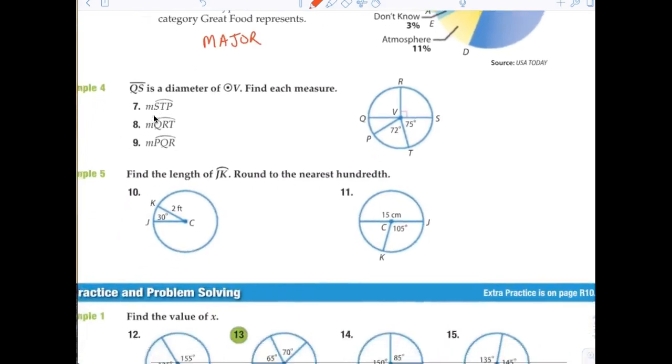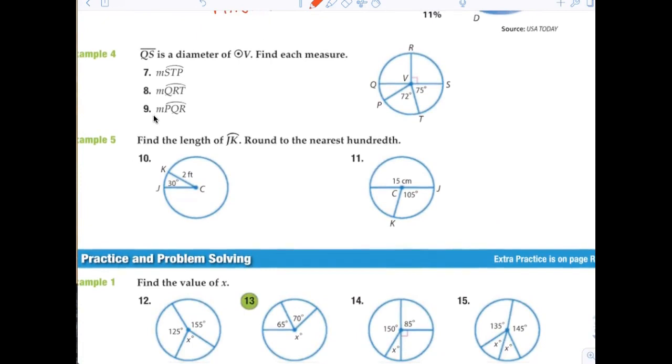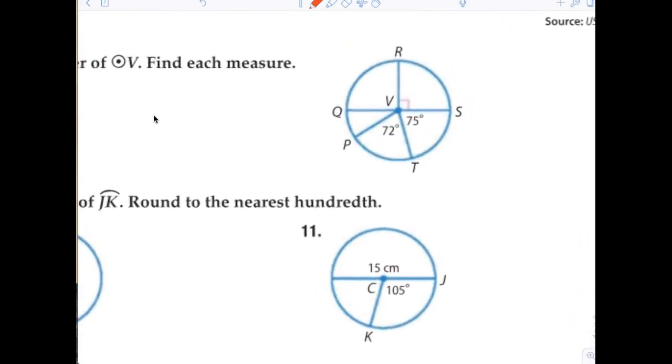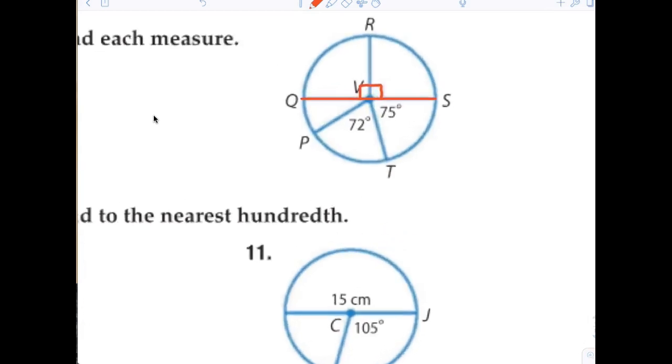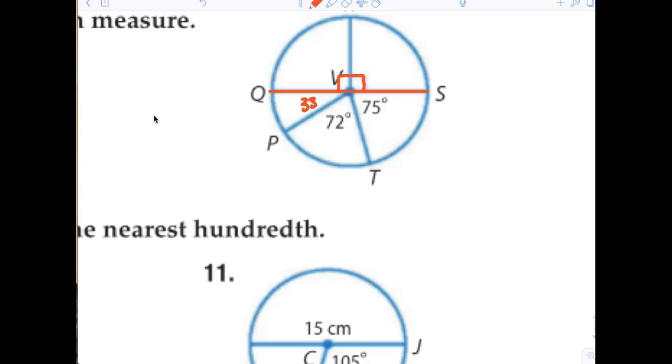Now, let's look down here. It says QS is a diameter. Find each measure. Now, when I'm having to find each measure, sometimes I find it easier to just go ahead and find all the missing angles and then answer the question. So, it says QS is a diameter. So, because QS is a diameter, then I know that's 9 degrees, which forces this to be 9 degrees. And so I want to find QP, so that angle would just be what? 33. I think it's 33 degrees.